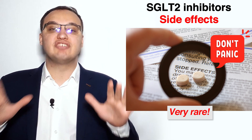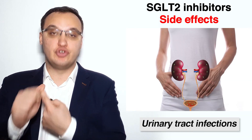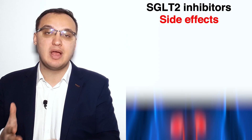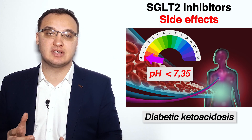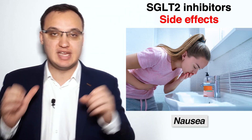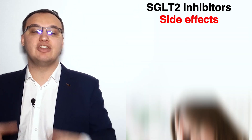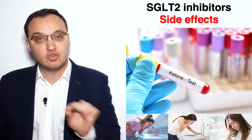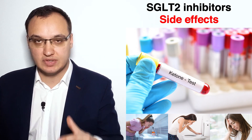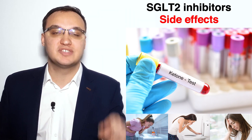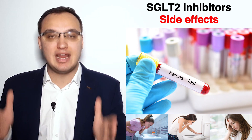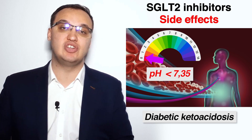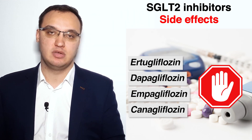Side effects of SGLT2 inhibitors include urinary tract infections, bladder cancer, hypotension, acute kidney injury, bone fractures, and diabetic ketoacidosis with symptoms such as nausea, vomiting, or malaise. An important lab value for patients taking SGLT2 inhibitors who show symptoms of diabetic ketoacidosis is serum ketones. If serum ketones are elevated, the patient has developed diabetic ketoacidosis and the medication must be stopped.